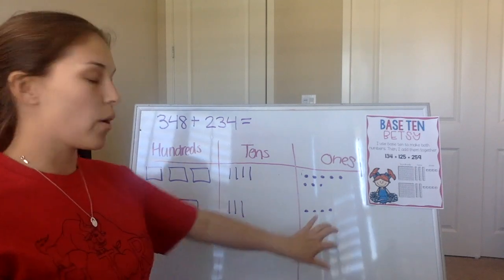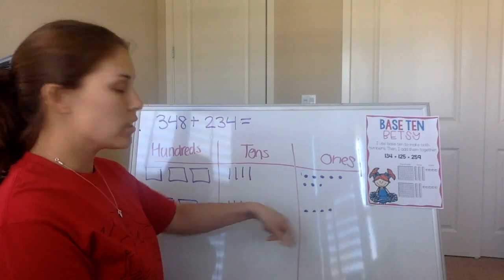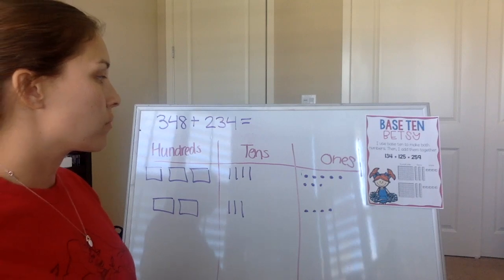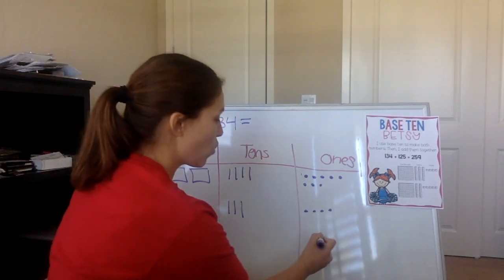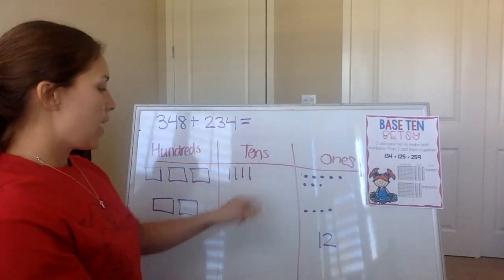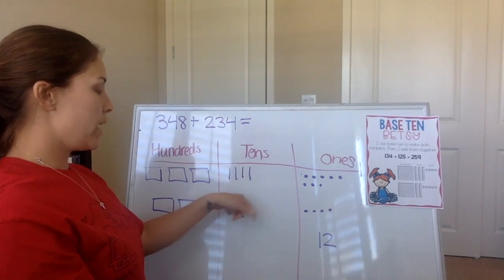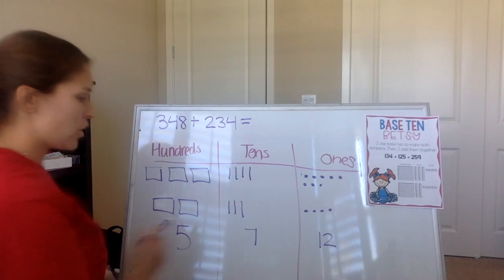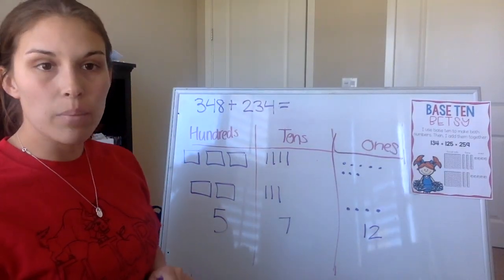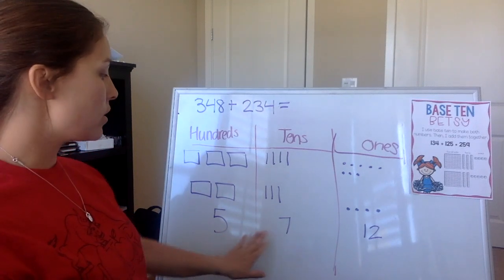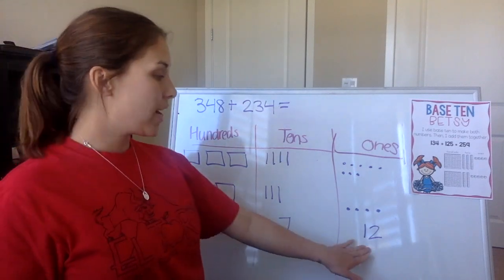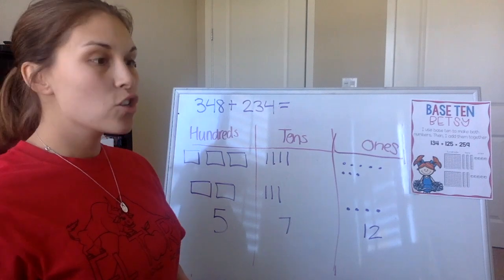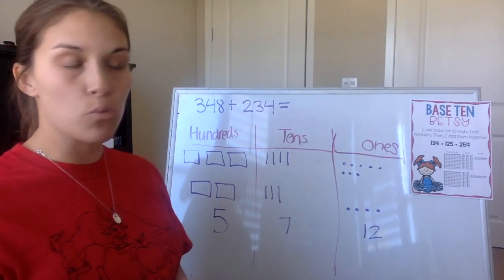We always start at the ones. So I have eight ones plus four — what is eight plus four, boys and girls? 12. Excellent, eight plus four is 12. We have three plus four, which is seven tens. And we have five hundreds. So once we have all our information on our base ten chart, we have five hundreds, seven tens, and twelve ones. But if you remember, we can't have twelve ones, so we need to do something which is called regrouping.